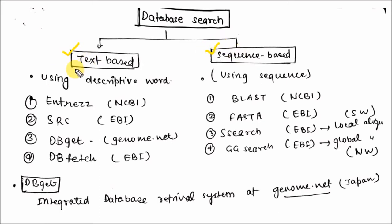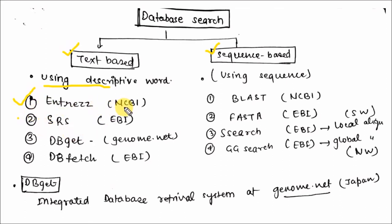In text-based tools, using descriptive words — for example, if you want to search E. coli genome or E. coli gene sequence, you can simply write descriptive words in the search box like 'E. coli gene'. Various tools are available for text-based search: Entrez present at NCBI, SRS (Sequence Retrieval System) present at EBI, DBGET present at genome.net Japan, and DBfetch present at EBI.